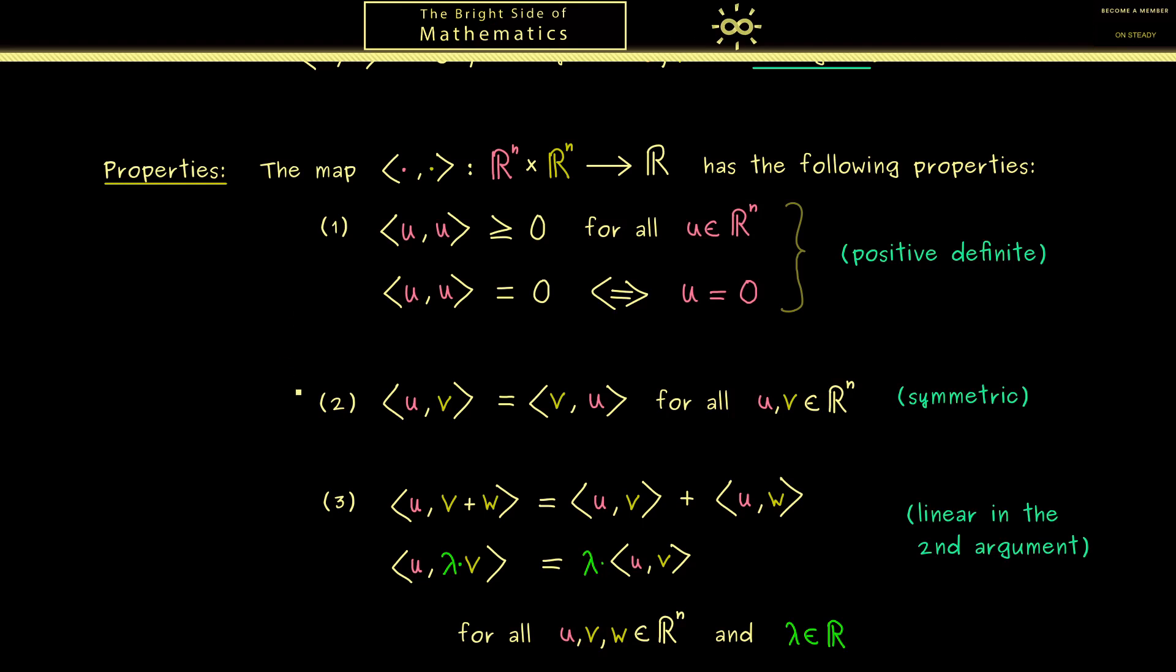However we don't have to formulate it because it follows immediately from 3 when we combine it with 2. In other words the symmetry gives us this linearity in both arguments. In summary these are the important properties of our standard inner product.